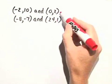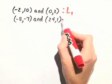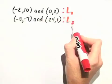Let's call the line joining this first pair of points L sub 1, and let's call the line joining the second pair of points L sub 2.